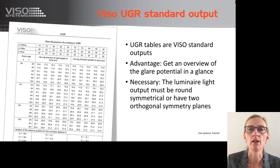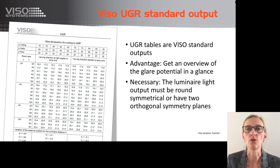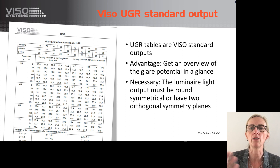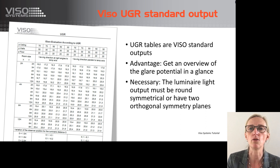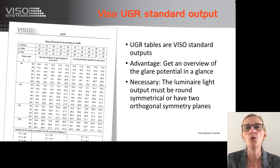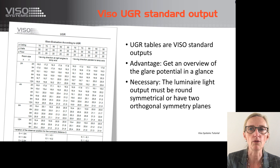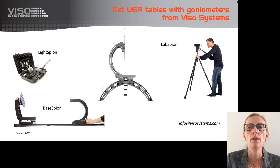UGR tables are not very precise because so many assumptions and approximations are made. But there are certainly advantages — the tabular values give you a great overview of the glare potential and make it easier to compare products even before making a detailed simulation. If all values are over 20, it will probably be hard to make the luminaire work in an office space. UGR tables are a Viso standard report output, provided that the light distribution is round symmetrical or has two orthogonal symmetry planes. Thank you very much for listening. Questions and comments are welcome at info@visosystems.com.